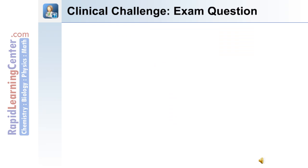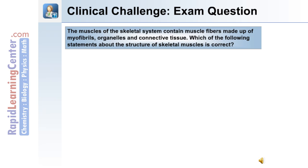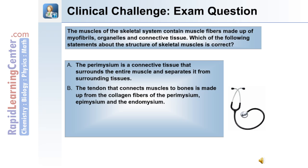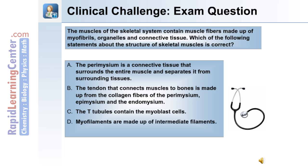Here's a clinical challenge exam question based on what you've learned so far. The muscles of the skeletal system contain muscle fibers made up of myofibrils, organelles, and connective tissue. Which of the following statements about the structure of skeletal muscles is correct? A: The paramycium is a connective tissue that surrounds the entire muscle and separates it from surrounding tissues. B: The tendon that connects muscles to bones is made up from the collagen fibers of the paramycium, epamycium, and endomycium. C: The T-tubules contain the myoblast cells. D: Myofilaments are made up of intermediate filaments. Or E: The sarcolemma surrounds the individual myofibrils.